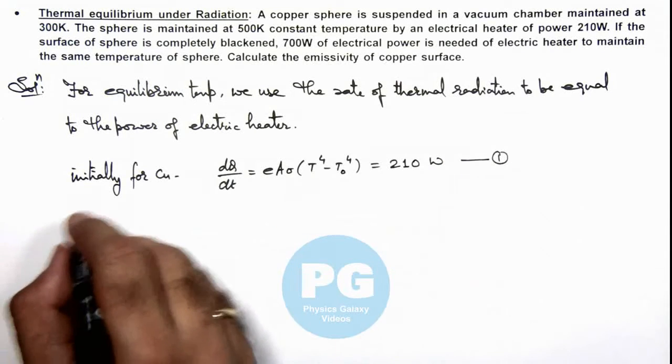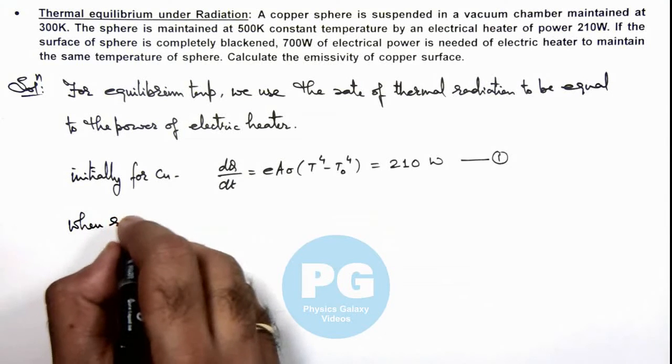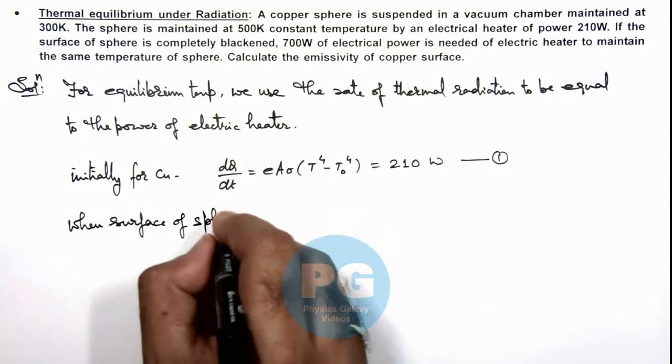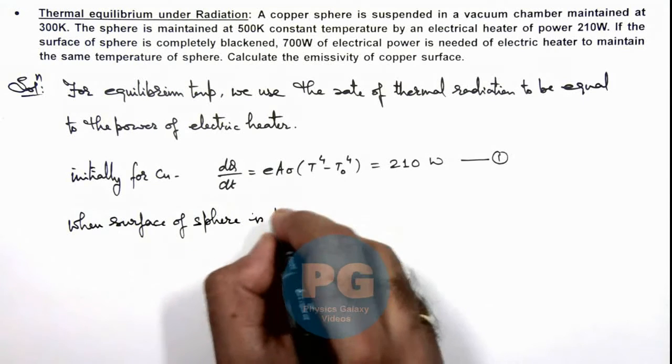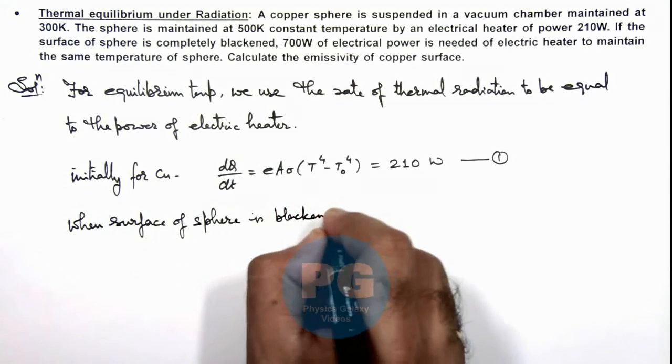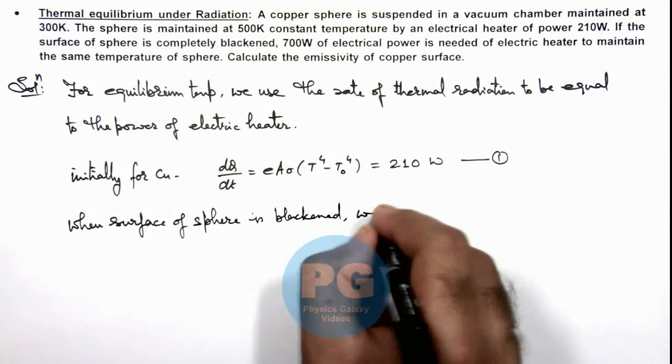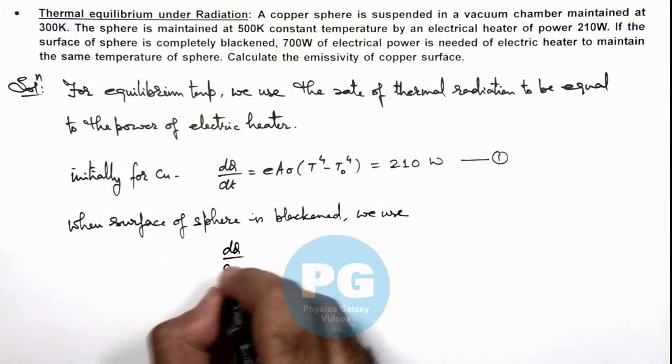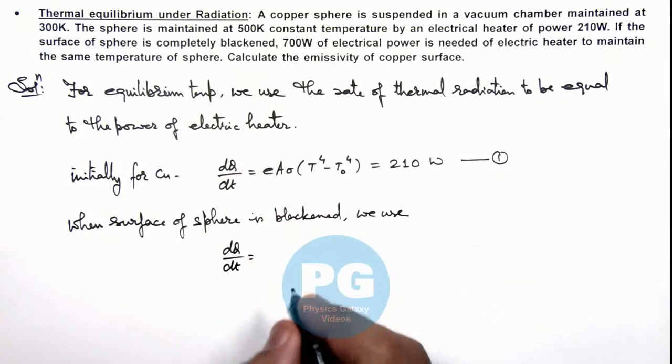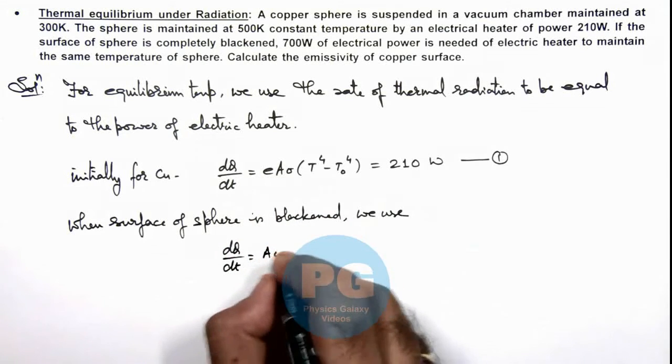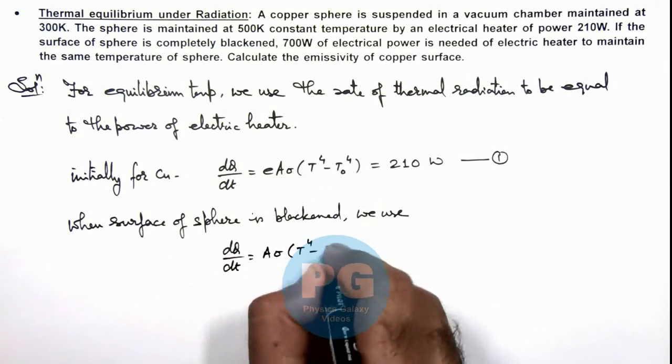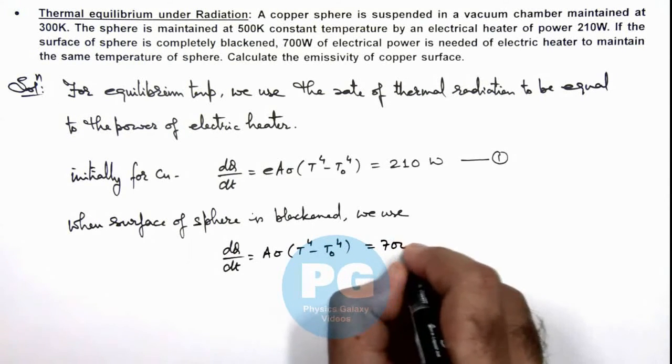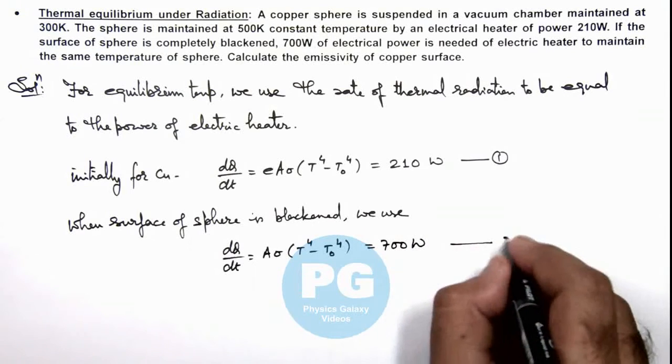And when surface of sphere is blackened, here we use dQ/dt, is now emissivity we can take as 1. This is A·σ(T^4 - T₀^4) and that should be equal to 700 watts as given to us. Say this equation 2.